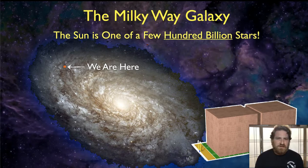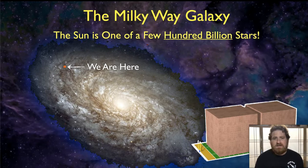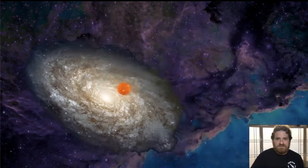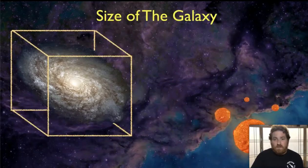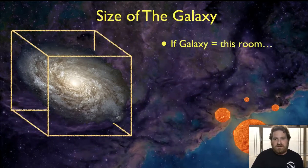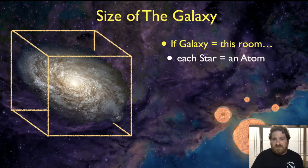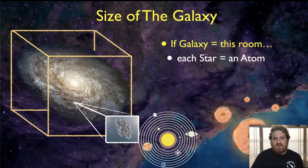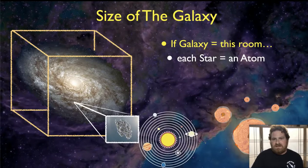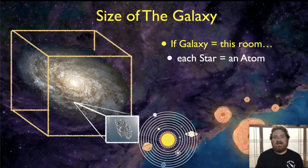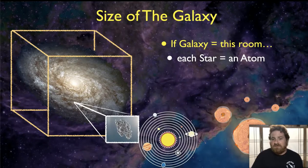So if you imagine now trying to build a scale model of the galaxy in our classroom, then the sun, one of a few hundred billion stars, would now have to shrink down to the size of a single atom amongst 200 to 400 billion other atoms. And so as you walked into that classroom, you would see this glowing disk of light, but you wouldn't be able to necessarily make out any one individual star. They're so small.